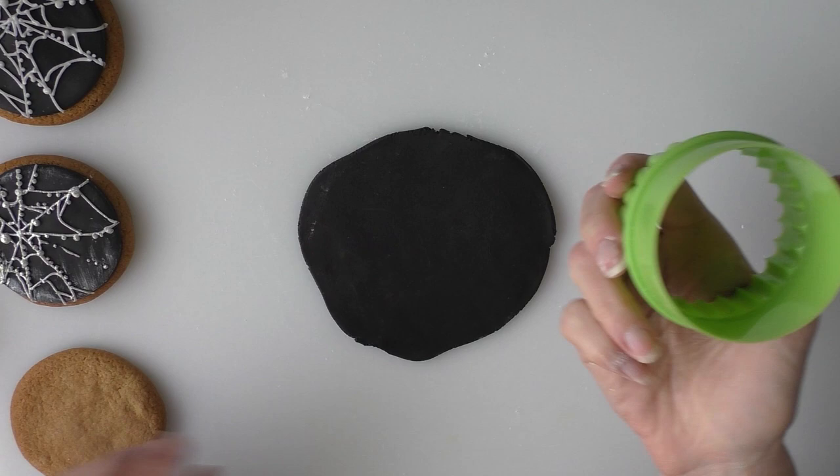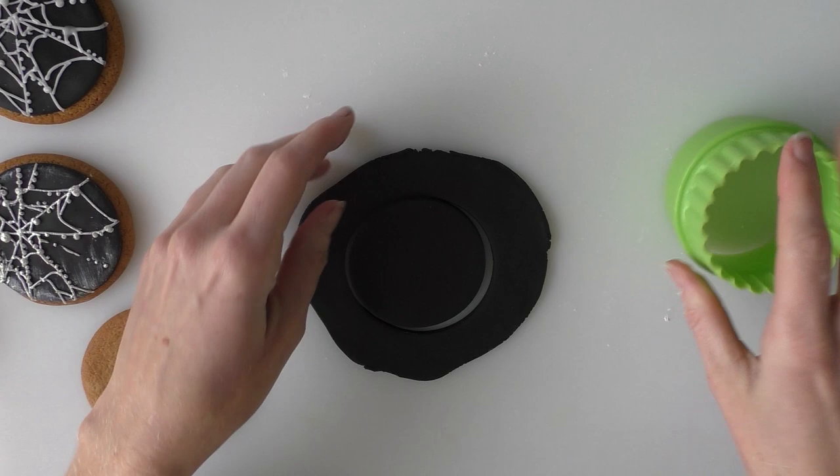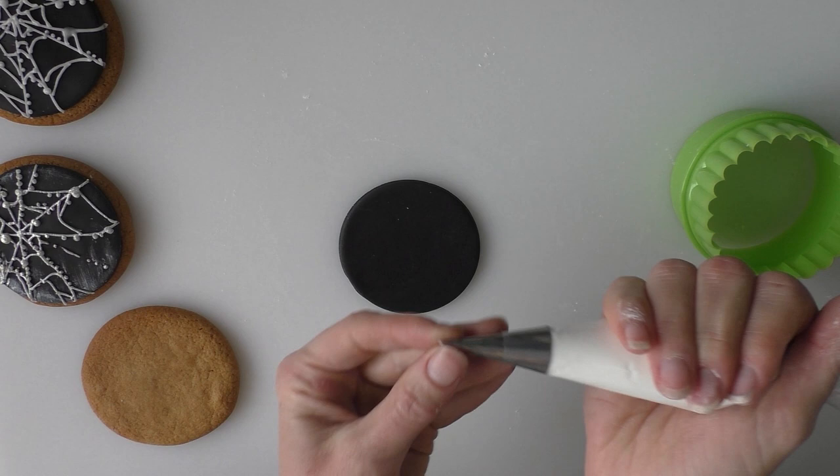Okay so I've rolled that nice and thin. Now using the same cutter that I used for my biscuits, I'm just going to cut out a circle.